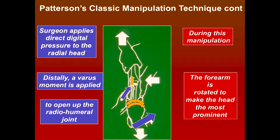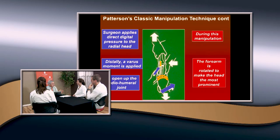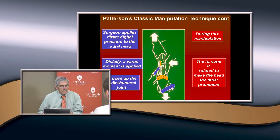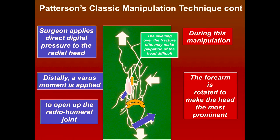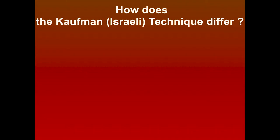The problem with the classic technique is that there's usually a lot of swelling there, making it difficult to find and feel that radial head. I've not found it to be a very effective method. If it's minimally displaced you might try it first. But another technique was popularized by an orthopedic surgeon named Kaufman in Israel - I call it the Israeli technique. It involves manipulating the elbow not in extension but in flexion.